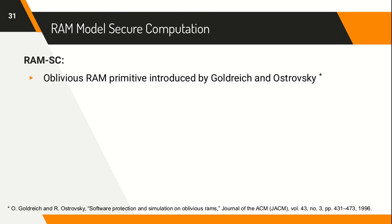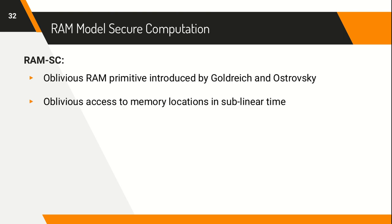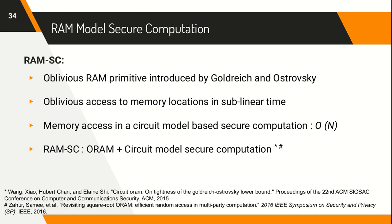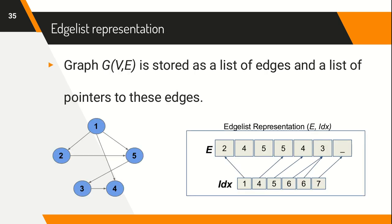In order to do this, we resort to the RAM model of secure computation, which considers the oblivious RAM primitive first introduced by Goldreich and Ostrovsky. The ORAM primitive allows oblivious accesses to memory locations in sub-linear time, which is far better than the linear time incurred by the circuit model of computation. The RAM model of secure computation, RAM-SC, allows us to have the best of both worlds by combining the ORAM primitive and the circuit model. There are several schemes designed for this, such as the circuit ORAM and the square root ORAM. To make the most of RAM-SC and to account for the sparsity of real-world networks, we use a space-efficient alternative to the adjacency matrix representation, known as the edge list representation.